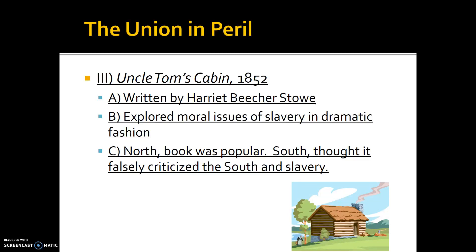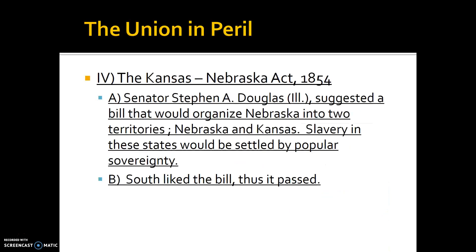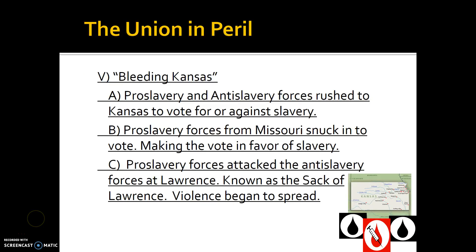Yet again, more things were beginning to split the nation apart. We get to the Kansas-Nebraska Act of 1854. Senator Stephen A. Douglas of Illinois suggested a bill that Nebraska should be split into two territories — Nebraska and Kansas — and that the slavery issue should no longer be settled through the Missouri Compromise. Instead, it should be settled by popular sovereignty: the people living in those territories would vote on whether they should be a slave or free state. The South enjoyed this bill because it gave the prospect of slavery extending further. It passed easily with just a few Northern senators joining.